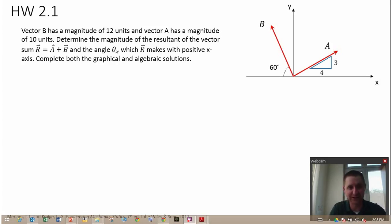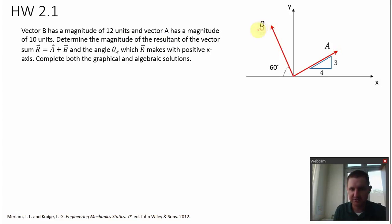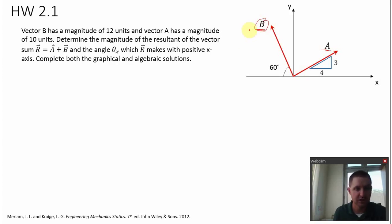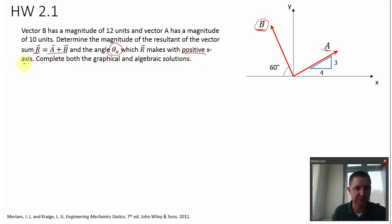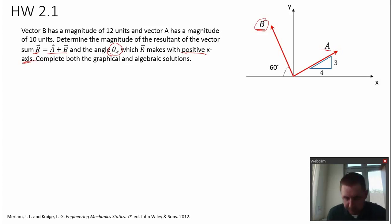Talk to your friends if you don't know what's going on in the problem, see if they can help you. So, I'll read the problem and we'll go from there. Vector B has a magnitude of 12 units and vector A has a magnitude of 10 units. Determine the magnitude of the resultant of the vector sum R — that's A plus B — and find the angle theta X which R makes with the positive X axis. We need to solve this problem both graphically and algebraically.